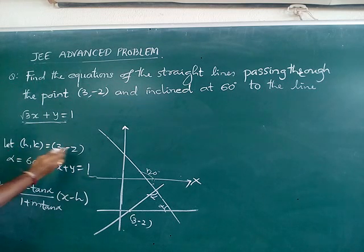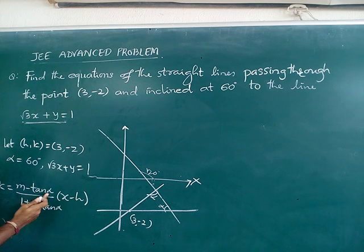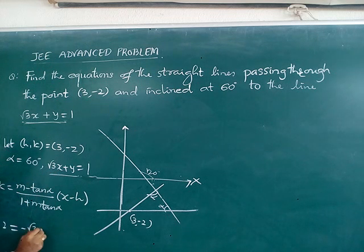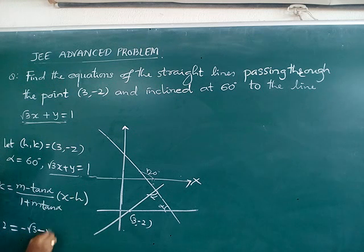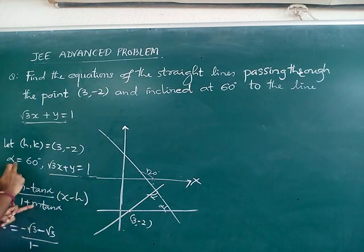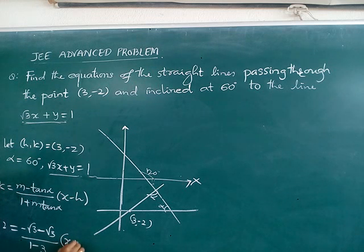Let us substitute the values of h and k and take the alpha value. This m is slope of the given value. I can say y minus k, which is y plus 2, m slope with this is minus root 3, and this is tan alpha, tan 60 is again root 3, minus root 3 divided by 1.